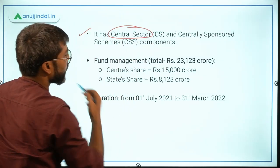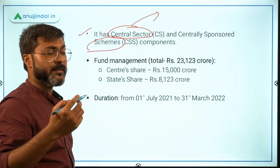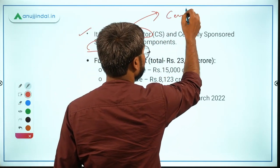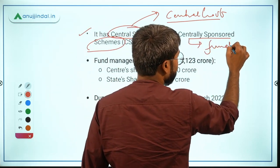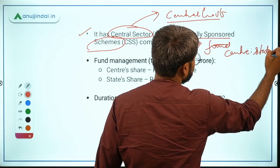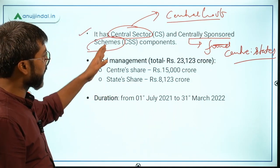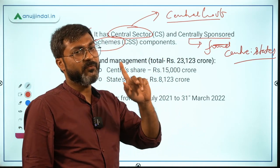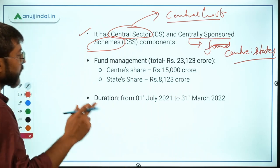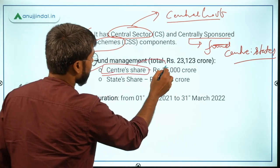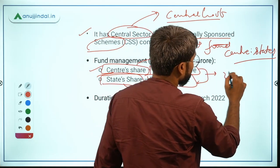This phase 2 package will have two components: one is the Central Sector component and the other is the Centrally Sponsored component. Central Sector means all funding is provided by the central government, while Centrally Sponsored means the funding is shared between the center and states. Under phase 2, the center will provide ₹15,000 crores while the state share would be ₹8,123 crores, totaling ₹23,123 crores.